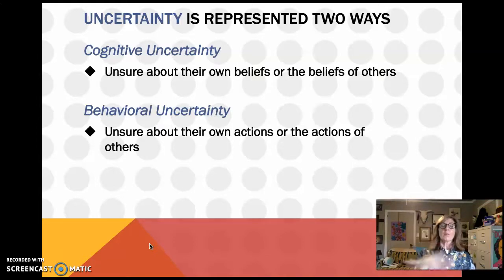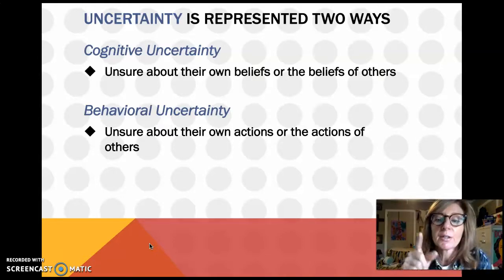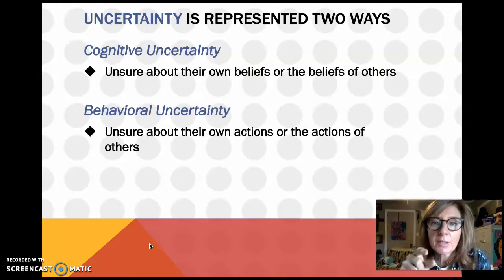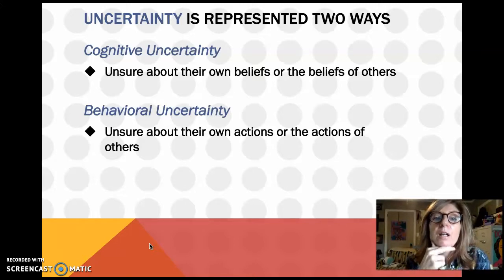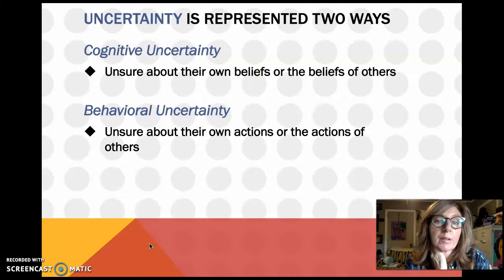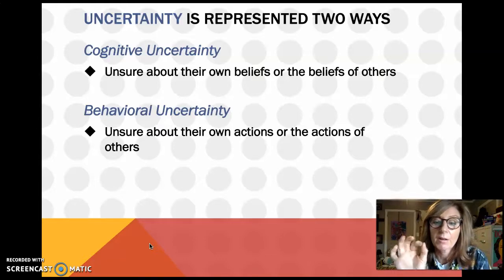We're reviewing these theories because you'll be using them in a paper that you're going to write. You're going to use a movie to apply the theory. The point is, the person needs to have those three conditions present for them to want to reduce the uncertainty.